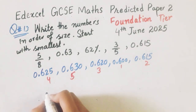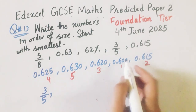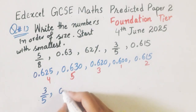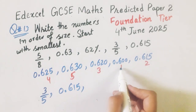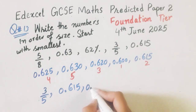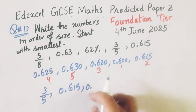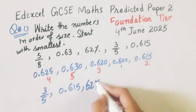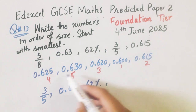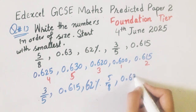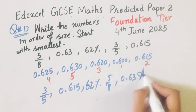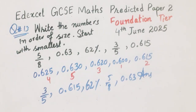So we will write the answer in ascending order as: 3/5, then 0.615, then 0.62%, then 5/8, and then 0.63. So this will be in the ascending order. Now we will solve question number 14.